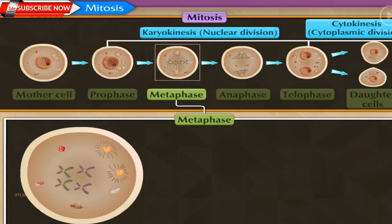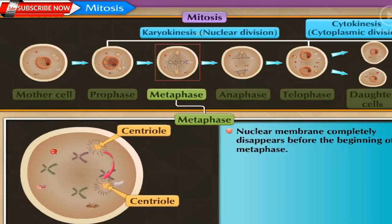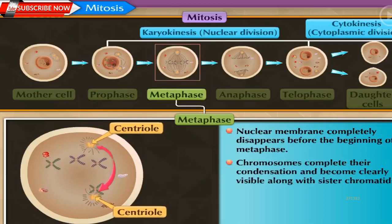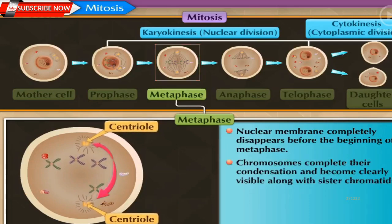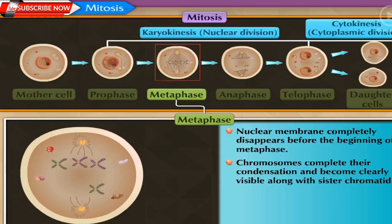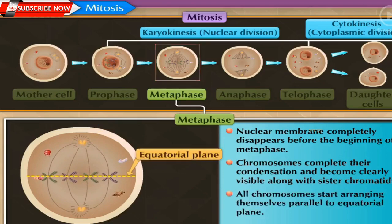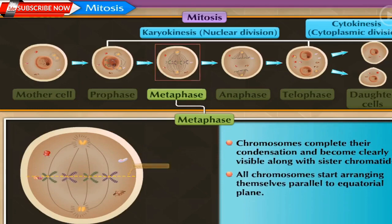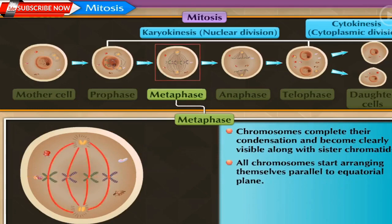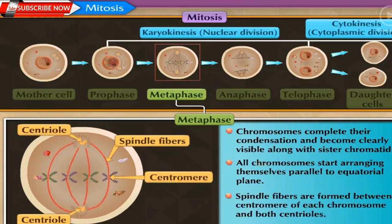In metaphase, the nuclear membrane completely disappears. Chromosomes complete their condensation and become clearly visible along with sister chromatids. All chromosomes start arranging themselves parallel to the equatorial plane — that is, the central plane of the cell. Special flexible protein fibers, also called spindle fibers, are formed between the centromere of each chromosome and both centrioles.